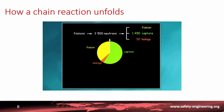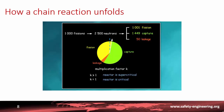When 1,000 fissions give 1,000 fissions, the multiplication factor k — by which the number of fissions is multiplied from one generation to the next — is equal to 1, in which case the reactor is said to be critical. If the number of fissions is then made to slightly increase, for instance from 1,000 to 1,001, the multiplication factor exceeds 1, in which case the reactor is said to be supercritical. The power level then increases from generation to generation.